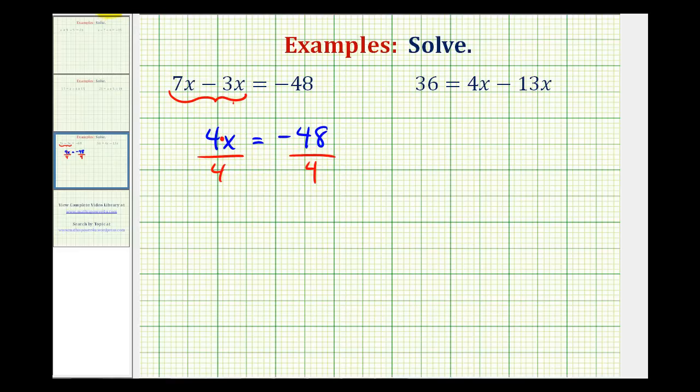Well 4 divided by 4 is equal to 1, and 1 times x is equal to x, so we have x equals negative 48 divided by positive 4 is equal to negative 12, so our solution is x equals negative 12.